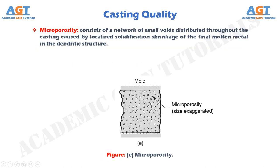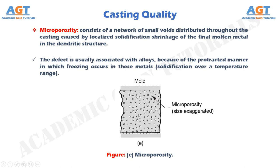Microporosity consists of a network of small voids distributed throughout the casting caused by localized solidification shrinkage of the final molten metal in the dendritic structure. The defect is usually associated with alloys, because of the protracted manner in which freezing occurs in these metals, solidification over a temperature range.